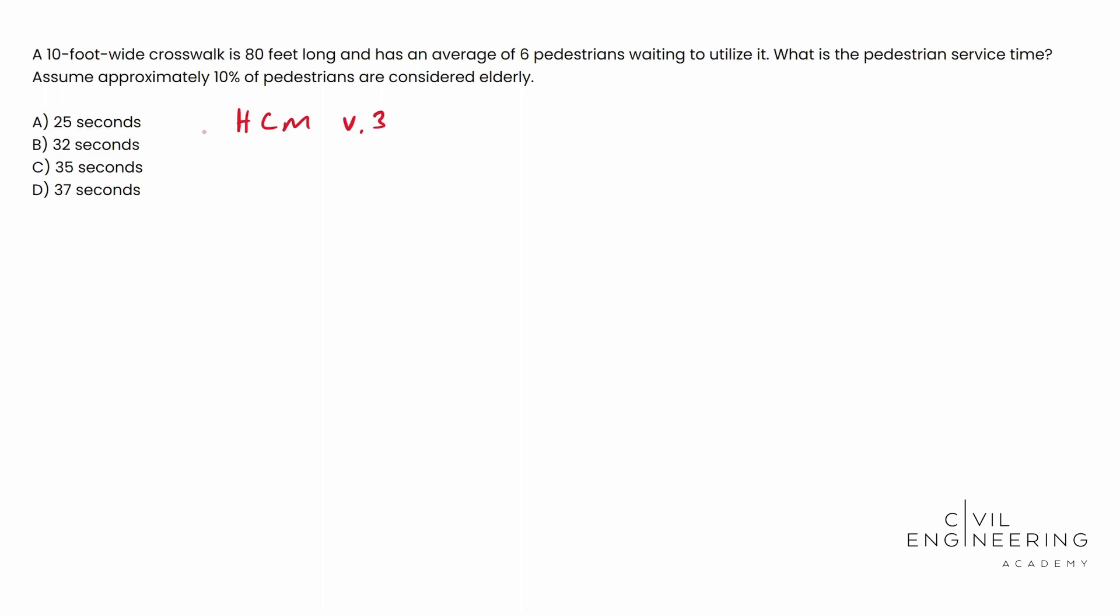You need to immediately identify whether it's interrupted or uninterrupted flow. So do you have traffic signals or not, that type of thing. So in this case we have a crosswalk. It can be inferred that we have a traffic signal. That's kind of the understanding—we're going to have to stop traffic for this crosswalk, so it's interrupted flow.